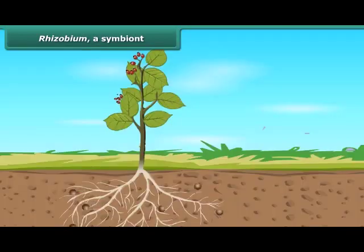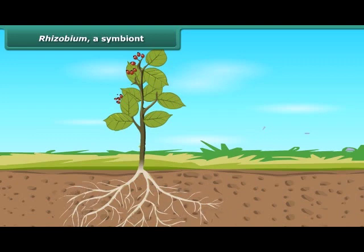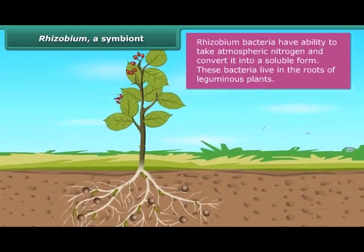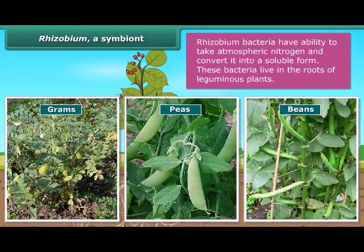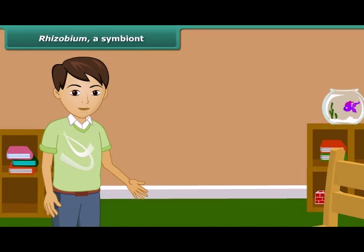Like us, plants also require a lot of nitrogen to make proteins. They absorb nitrogen continuously from the soil, causing the amount of nitrogen to become deficient. There is 78% nitrogen present in our atmosphere, but plants cannot use it directly as they can use carbon dioxide. They require nitrogen in soluble form. The bacterium called Rhizobium can take atmospheric nitrogen and convert it into a soluble form. These bacteria live in the roots of gram, peas, moon beans, and other legumes, providing them with nitrogen. In return, the plants provide food and shelter to the bacteria. Thus, Rhizobium shows a symbiotic relationship.